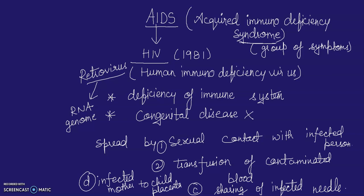In the NCERT textbook, there is a picture showing the replication of retroviruses. It shows the viral protein core entering an animal cell. This covers the basics of AIDS — how it spreads from one person to another and which virus is responsible, that is the deadly HIV virus.